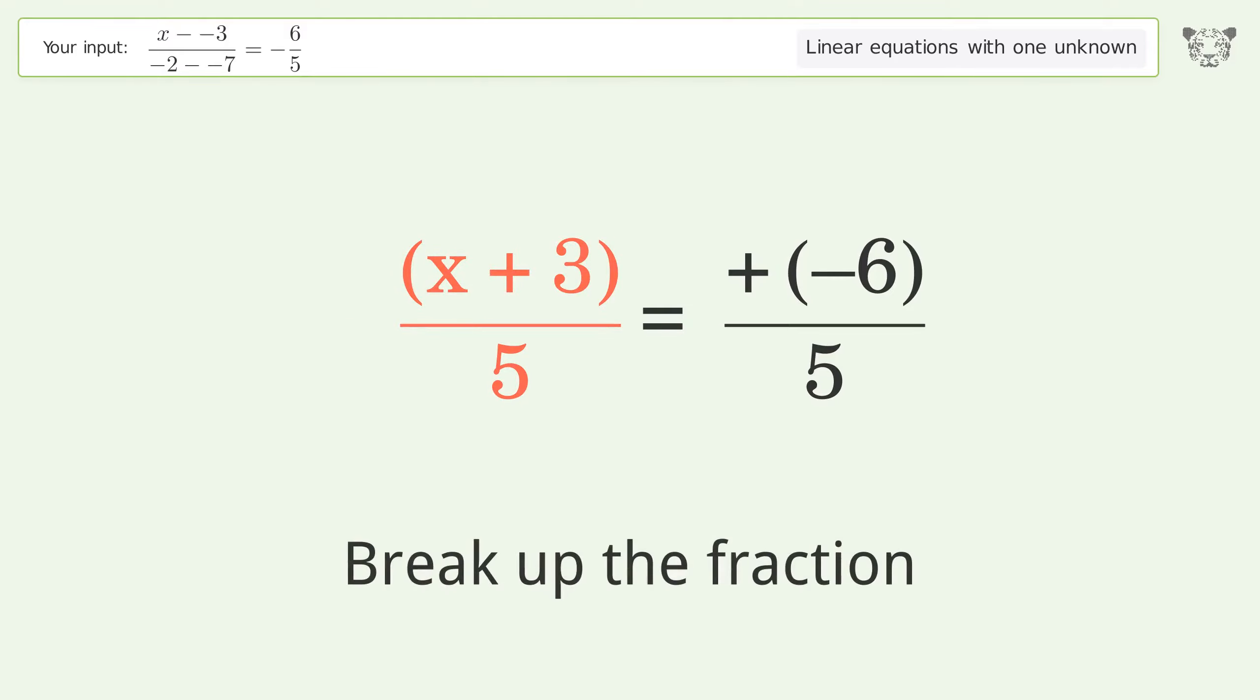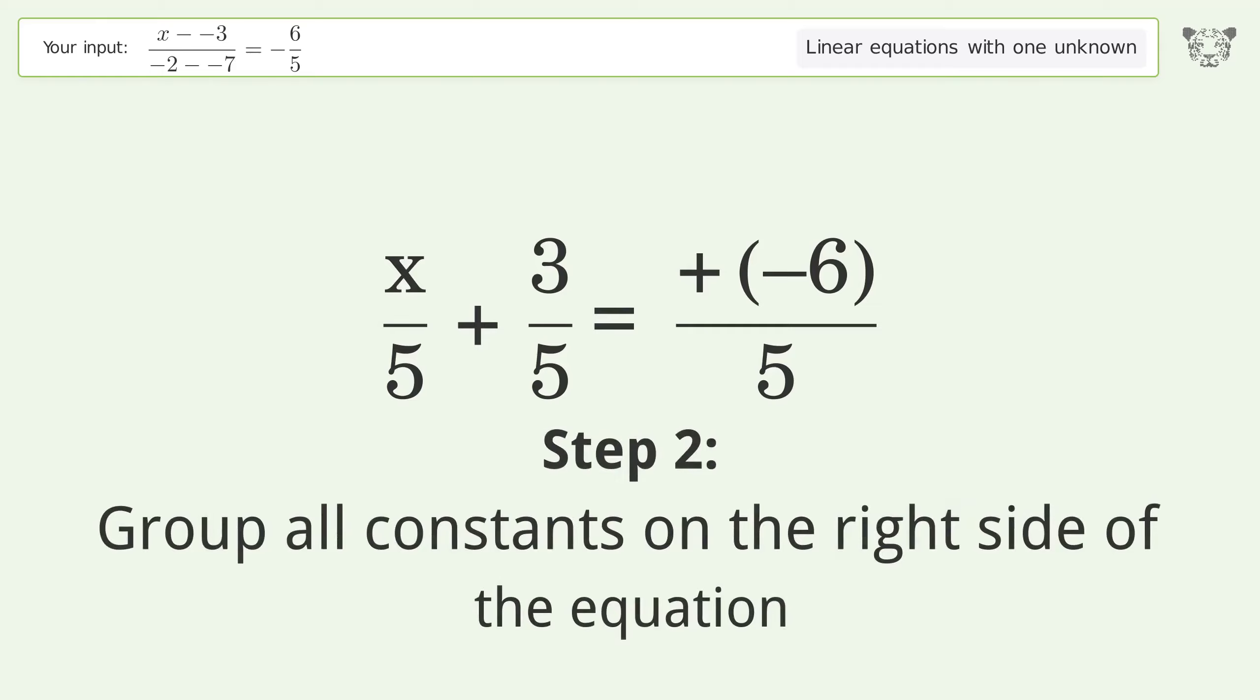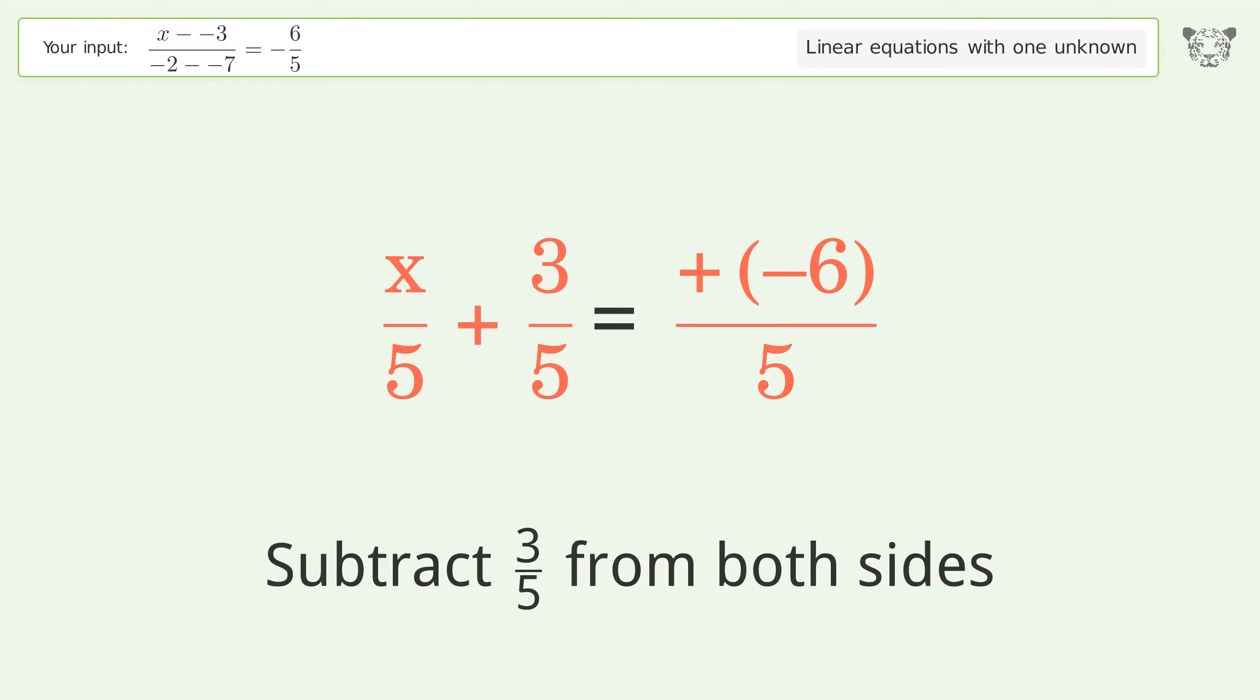Break up the fraction. Group all constants on the right side of the equation. Subtract 3 over 5 from both sides.